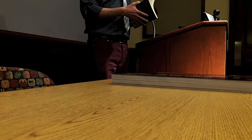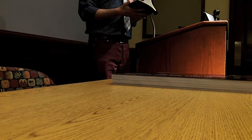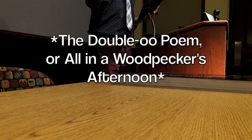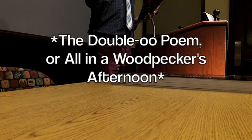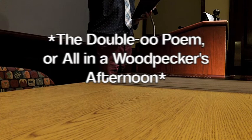So, last poem. It's been an amazing night. So, my last name is spelled with two L's. Seagull with two L's. Which I always thought was really weird. So, I'm into that kind of stuff. Letters and how they develop them and words and stuff like that. So, this is called the double O poem. Or, all in a woodpecker's afternoon. And it's dumb. But let's do it.